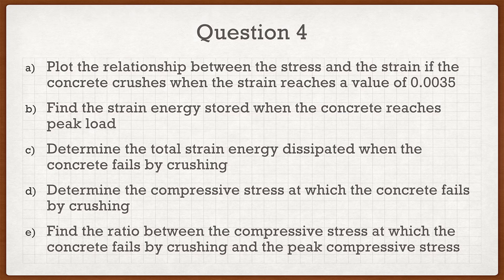Part A says: plot the relationship between compressive stress and strain if the concrete crushes when strain reaches 0.0035. This is a piece of cake because we have a nice equation relating stress and strain. All you have to do is plot that equation from epsilon = 0 to epsilon = 0.0035. Part B asks to find the strain energy stored when the concrete reaches peak load, and Part C asks to determine the total strain energy dissipated when the concrete fails by crushing — essentially the same procedure.